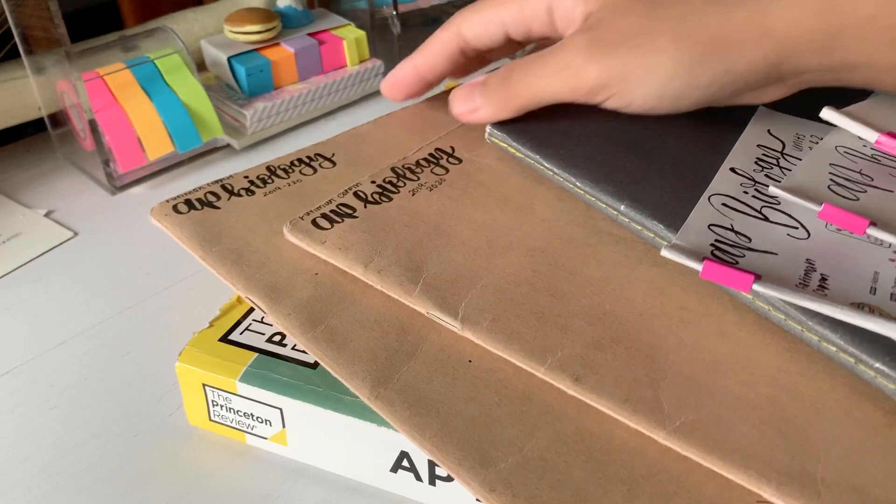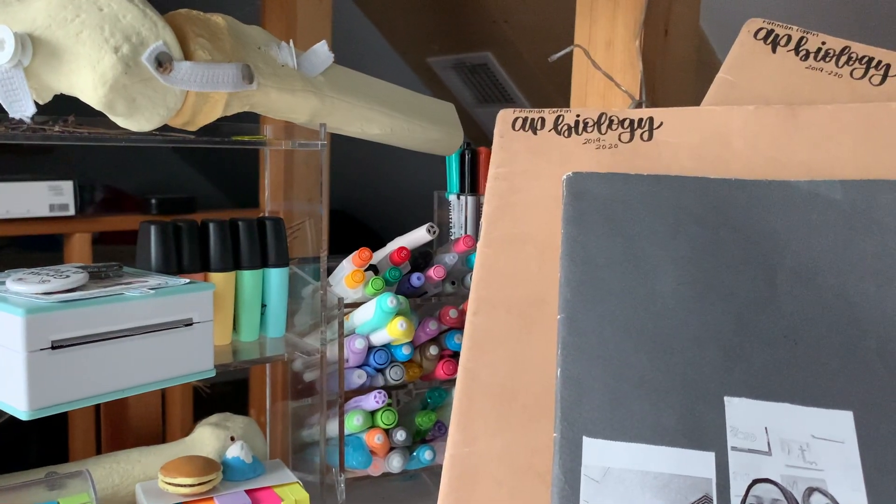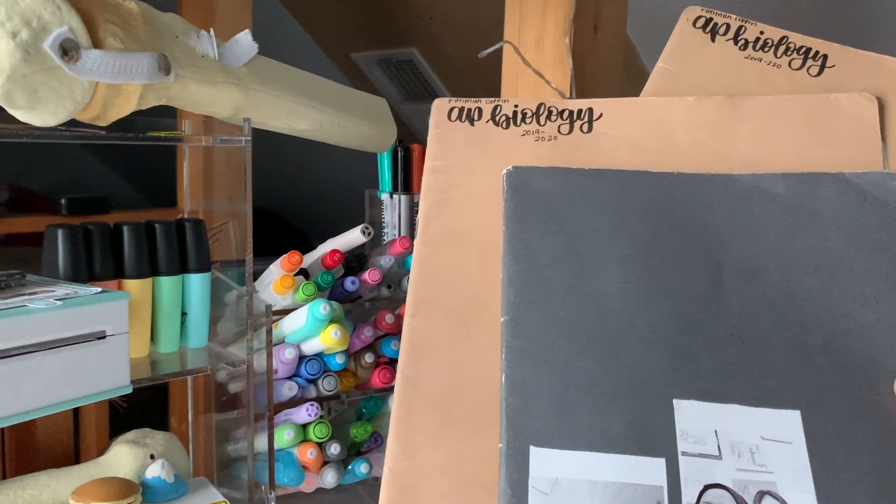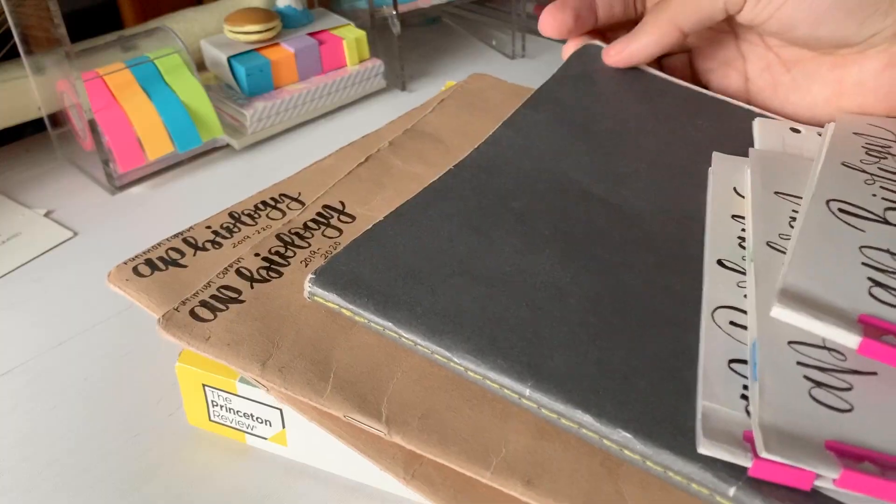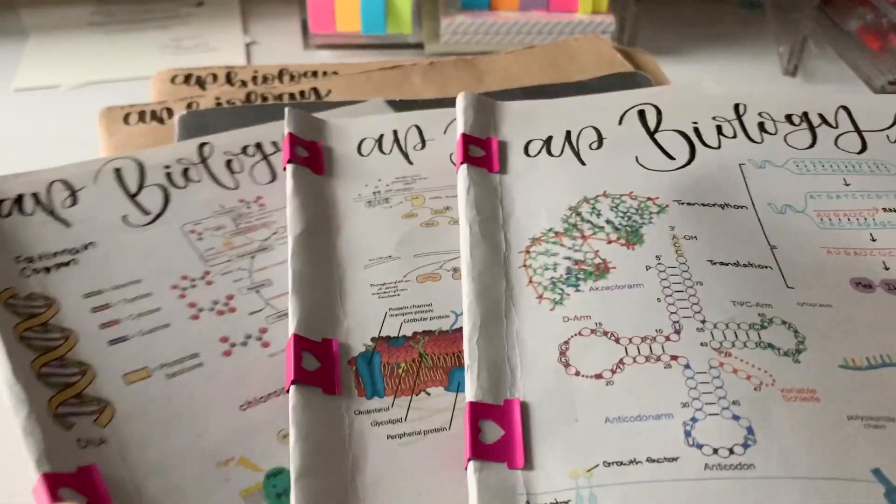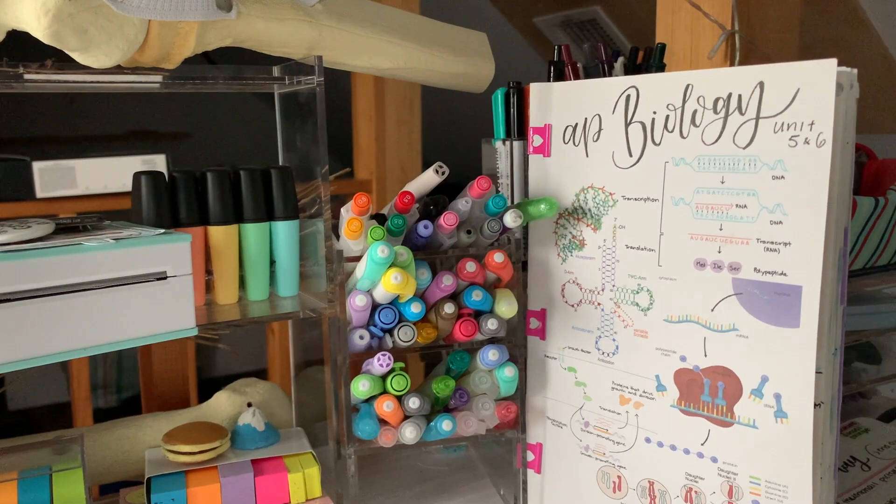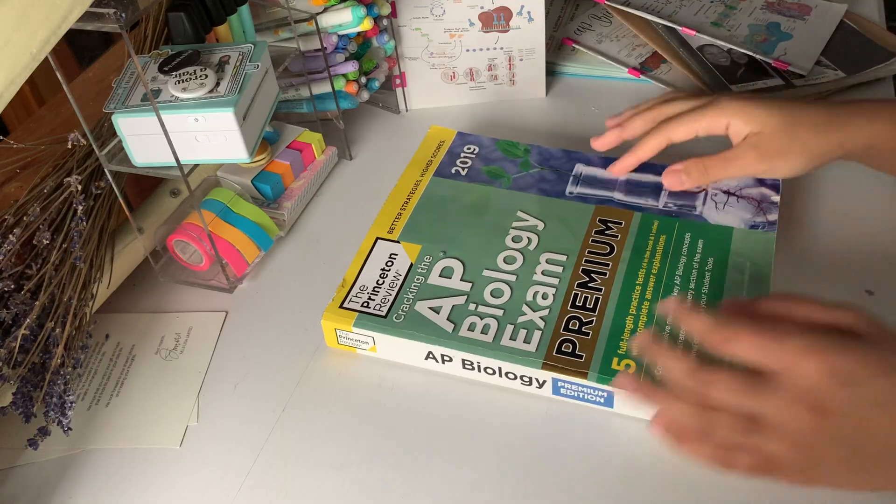Then we have my in-class notes. These two notebooks from Muji are huge and I filled them up the first half of the year, and then this black notebook is only halfway filled up. Finally we have our three AP biology revision books which are the books that are made in order to prepare for the AP exam.